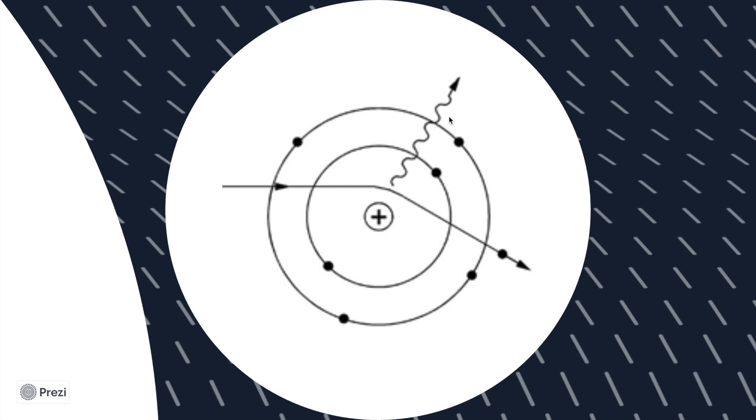To obtain the energy of the x-ray photon, find the difference between the entering kinetic energy of the electron minus the exiting kinetic energy of the same electron. The energy of the x-ray photon depends on how close the incoming electron hits the nucleus.